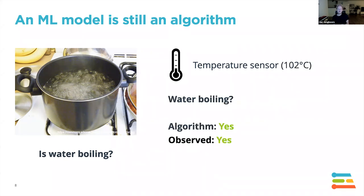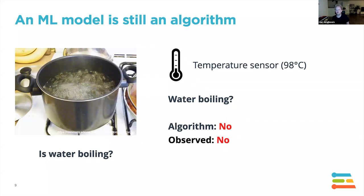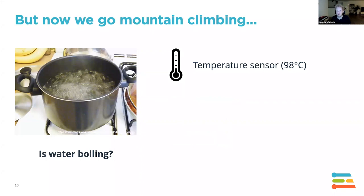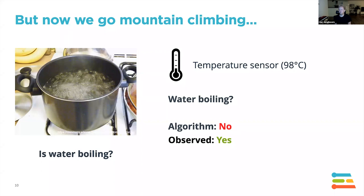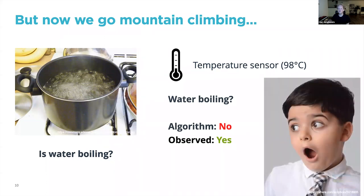You test this and it works in the kitchen. But now one of your customers goes mountain climbing — the temperature is still 98 degrees, so your algorithm says not boiling, but you observe it actually is boiling. There's a hidden variable related to altitude that changed the assumption in the model. Machine learning is great at finding this hidden correlation. We know altitude probably affects the boiling temperature of water, but without knowing the formula, that's where machine learning helps.